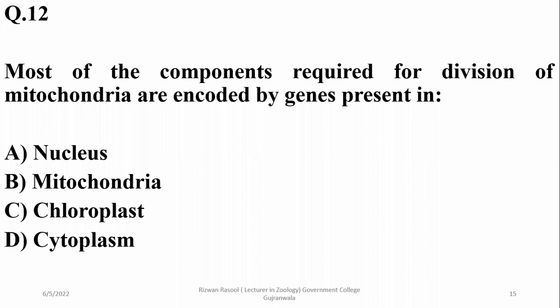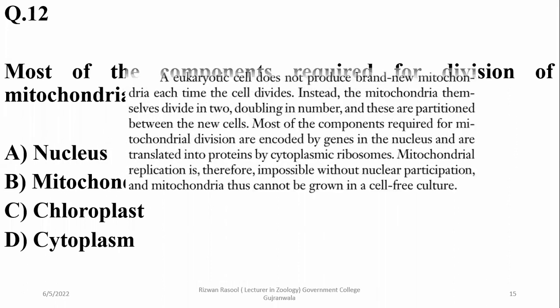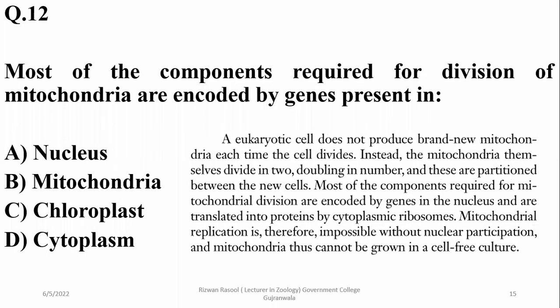Question 12: Most of the components required for division of mitochondria are encoded by genes present in the nucleus. Most mitochondrial components are encoded by genes in the nucleus and translated into proteins by cytoplasmic ribosomes. Mitochondrial replication is therefore impossible without nuclear participation. Right option is A.